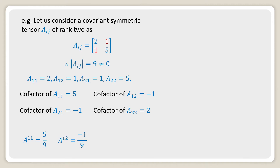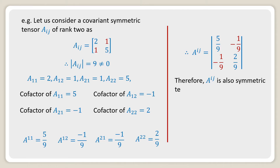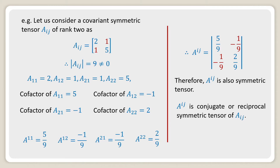Similarly, A upper 12 equals minus 1 over 9, A upper 21 equals minus 1 over 9, and A upper 22 equals 2 over 9. Therefore the contravariant tensor A upper ij can be expressed as the matrix [5/9, -1/9; -1/9, 2/9]. Therefore A upper ij is also a symmetric tensor, and this contravariant tensor A upper ij is the conjugate or reciprocal symmetric tensor of covariant tensor Aij.